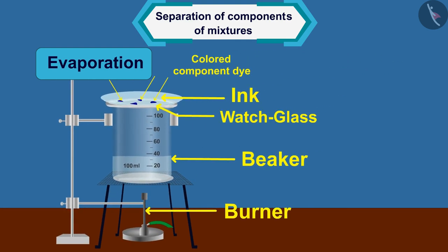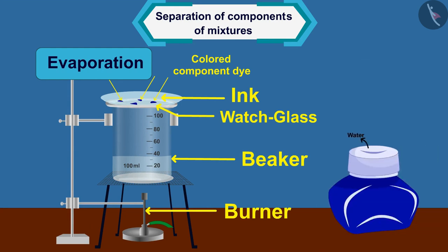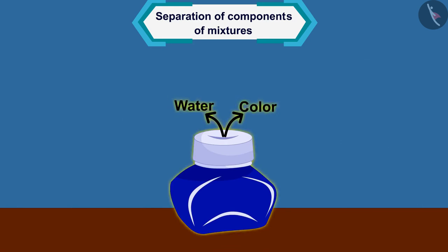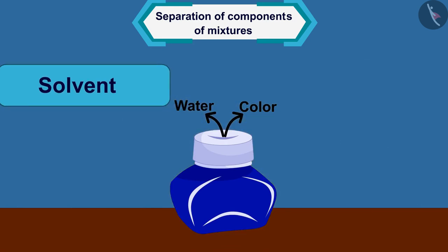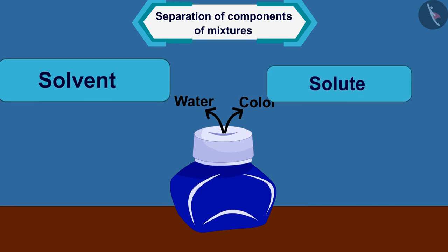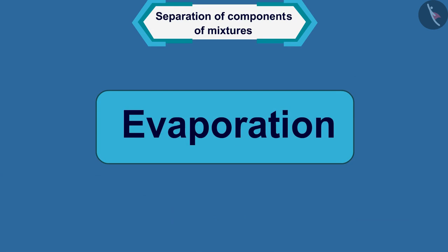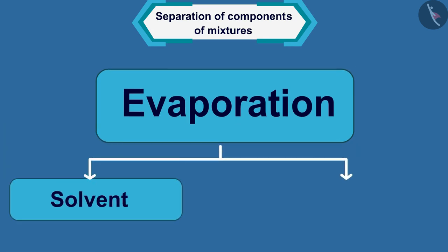So, we can now conclude by this activity that ink is a mixture composed of water and color components, in which water is a solvent and color is a solute. And we can separate the solute from the solvent in mixtures such as ink by evaporation.